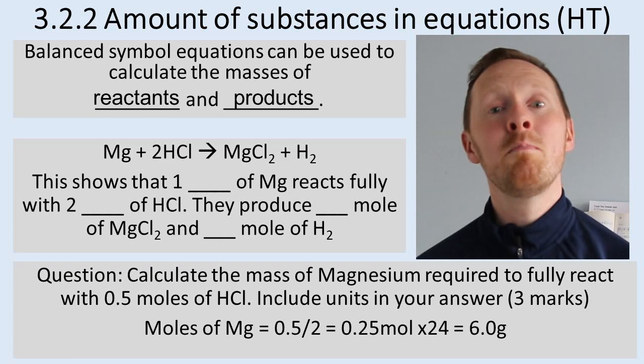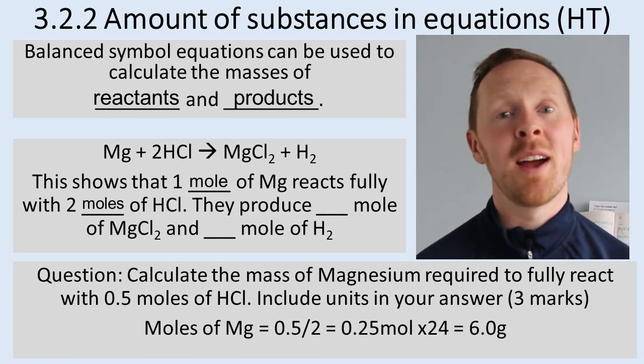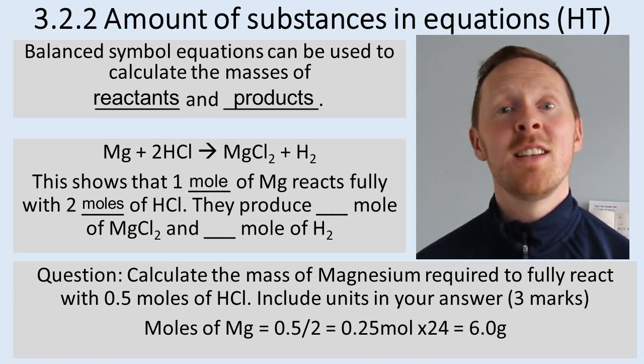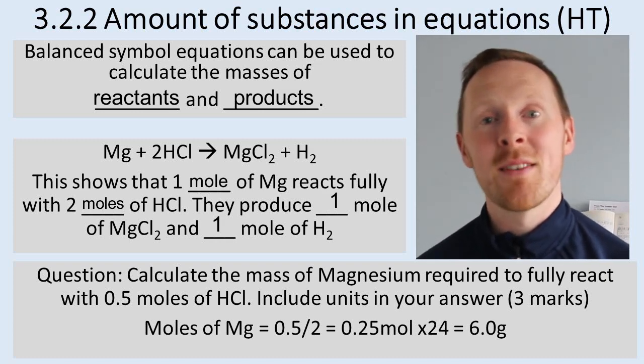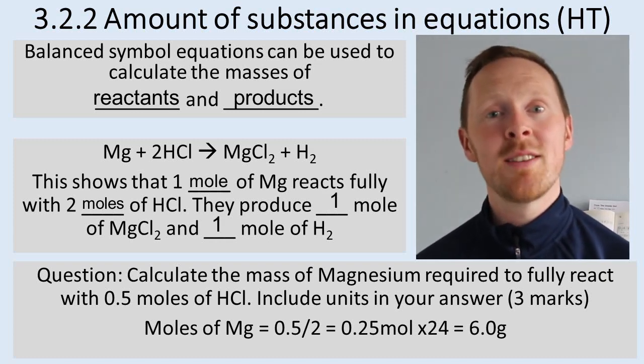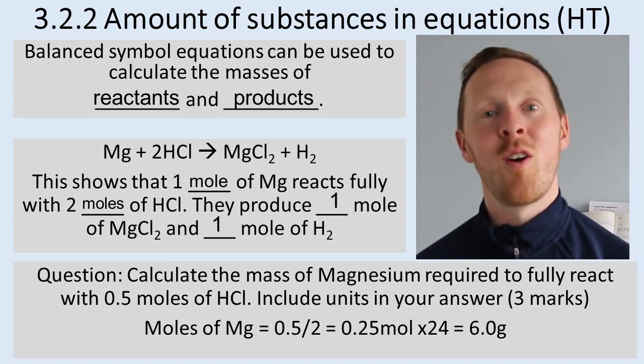We can see that one mole of magnesium will react with two moles of hydrogen chloride, hydrochloric acid, to make one mole of magnesium chloride and one mole of hydrogen gas. So straight away our balanced equation tells us the relative number of moles of reactants and products that are used or formed.